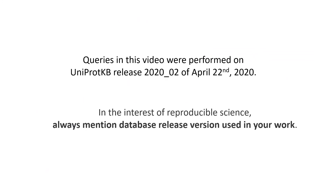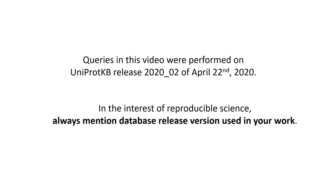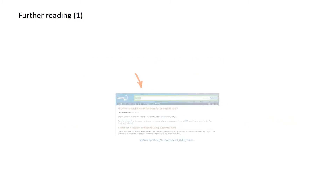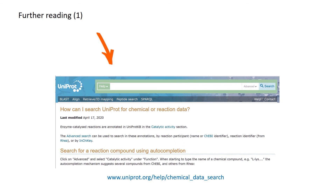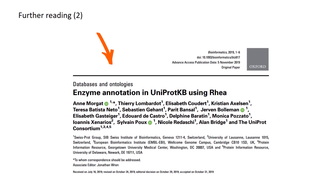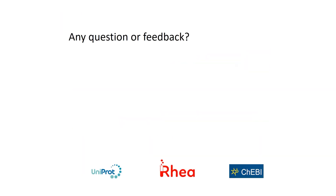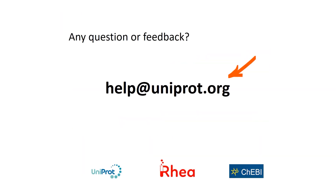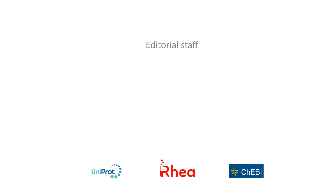Queries in this video were performed on the UniProt KB release of April 2020. Additional and more detailed information with more interesting examples are available on our help page dedicated to the search for chemical or reaction data in UniProt KB. You can also read our article on enzyme annotation using RIA and follow us on YouTube for more tutorials. Please don't hesitate to contact us by email with any feedback. Thank you very much for your attention.